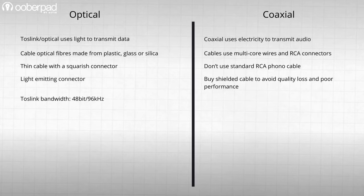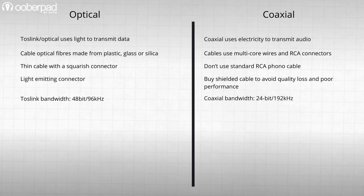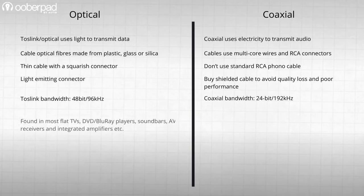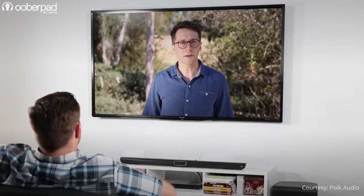TOSLINK is capable of handling a bandwidth of up to 48-bit/96kHz. Coaxial digital, on the other hand, is capable of handling a bandwidth of up to 24-bit/192kHz, making it a clear leader in terms of resolution.